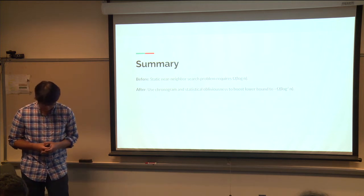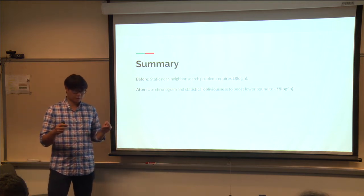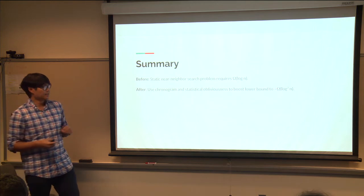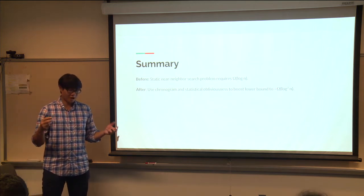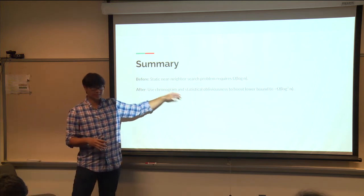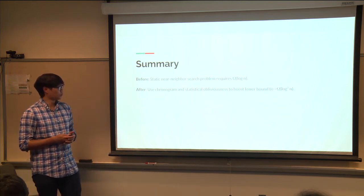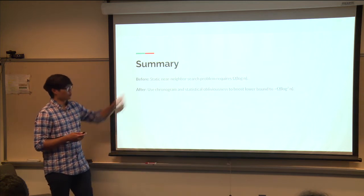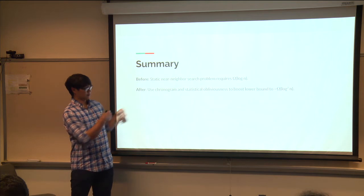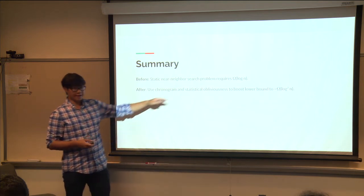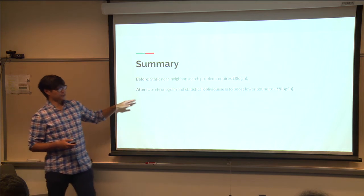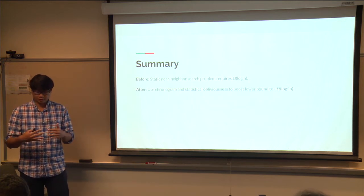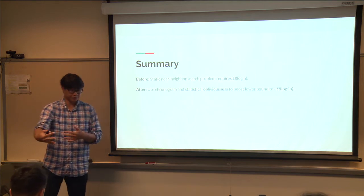To summarize: we had static near-neighbor search requiring omega log n overhead. Using the chronogram plus cell sampling, plus the heavy hammer of statistical obliviousness, we get a log-squared n lower bound for oblivious near-neighbor search. Obliviousness lets us get around all the problems arising from near-neighbor search being such a sparse query into a database.